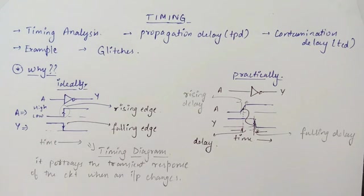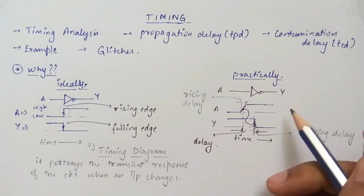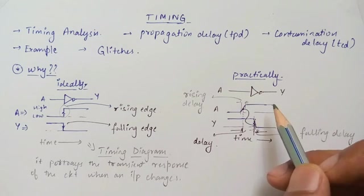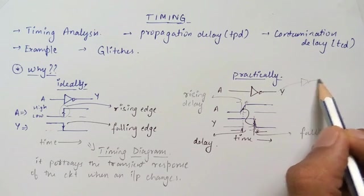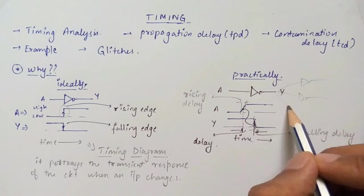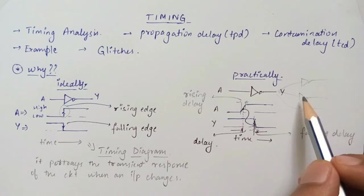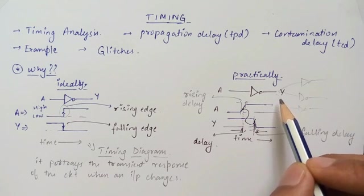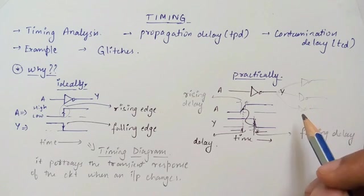Let's look at the cause behind the delay in a digital circuit. A circuit is made up of gates, and gates are made up of transistors, and transistors have capacitance in them. These digital circuits drive many other digital circuits and thus add up the capacitances. The charging and discharging of these capacitances takes place when input or output transitions from one state to another, and this leads to the delay in our circuits.